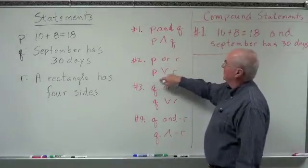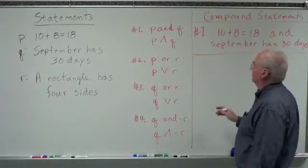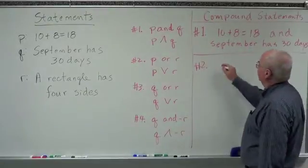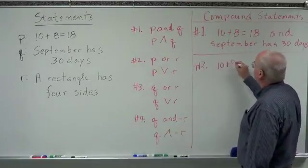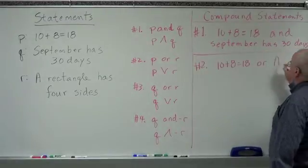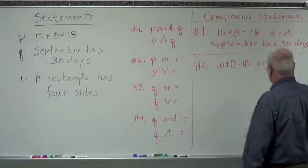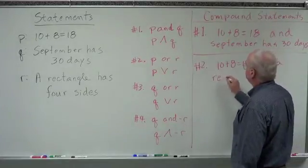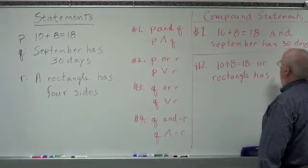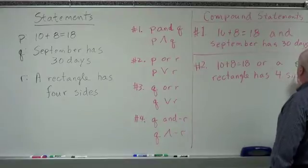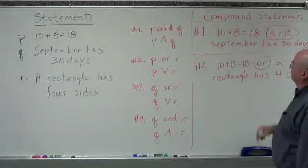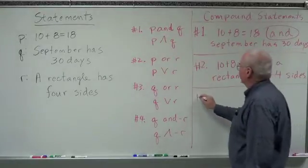Number two is P or R. What's P? 10 plus 8 equals 18, or a rectangle has four sides. Pretty easy.